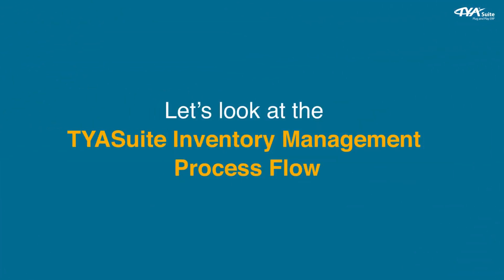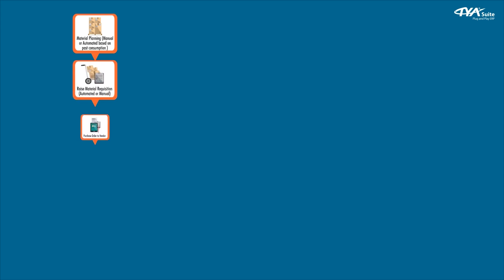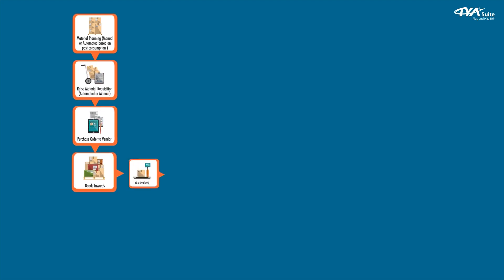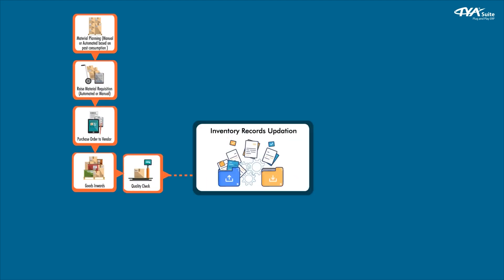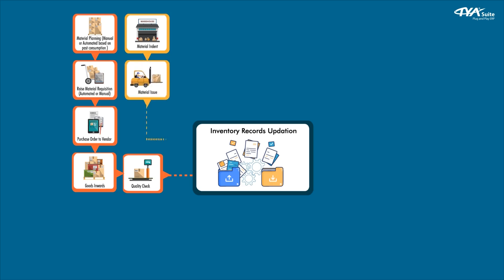Let's look at the TYASuit inventory management process flow. Material planning — manual or automated based on past consumption. Raise material requisition — automated or manual. Purchase order to vendor. Goods inwards. Quality check. Inventory records updation. Material indent. Material issue. Inventory records updation.